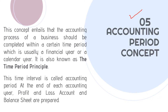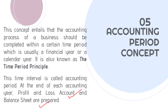Another concept is the accounting period concept, also known as the time period principle. In the going concern concept, we assume the business will run for an indefinite period. But it is not practical to wait indefinitely to measure performance, so we divide time into a particular period called the financial year or calendar year. After that period, we prepare a profit and loss account and balance sheet to find the business's actual financial position. In India, the financial year runs from 1st April to 31st March.